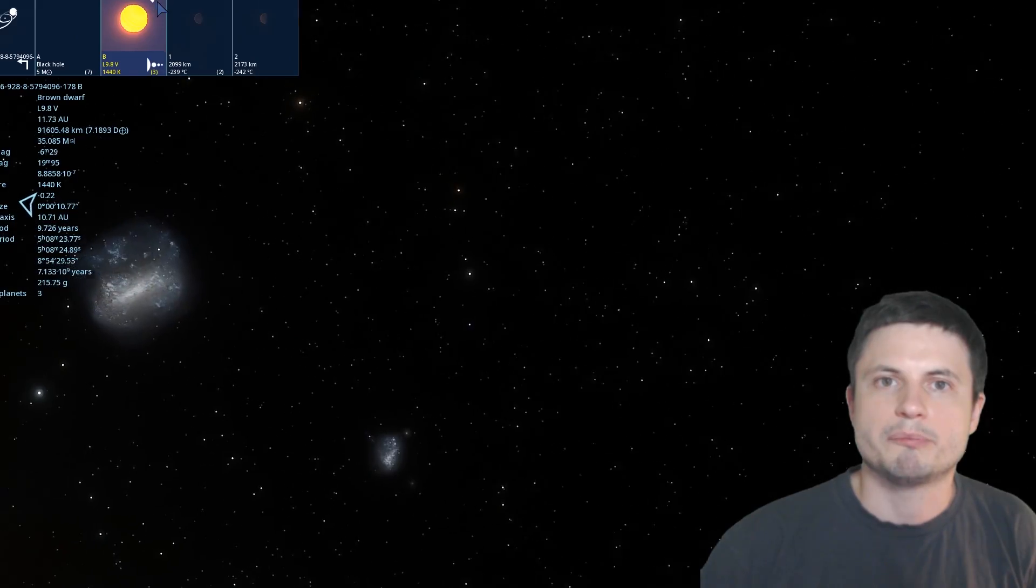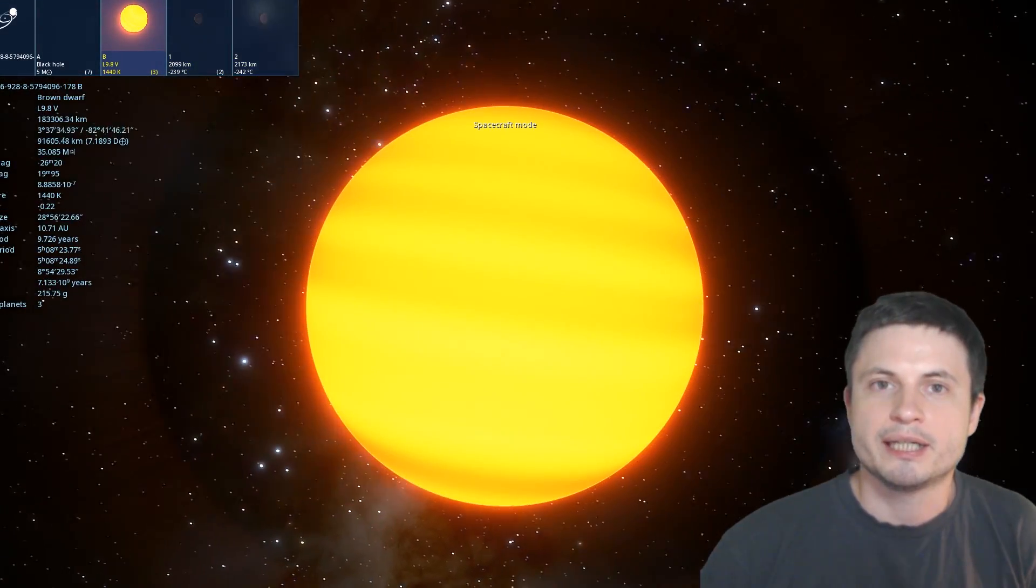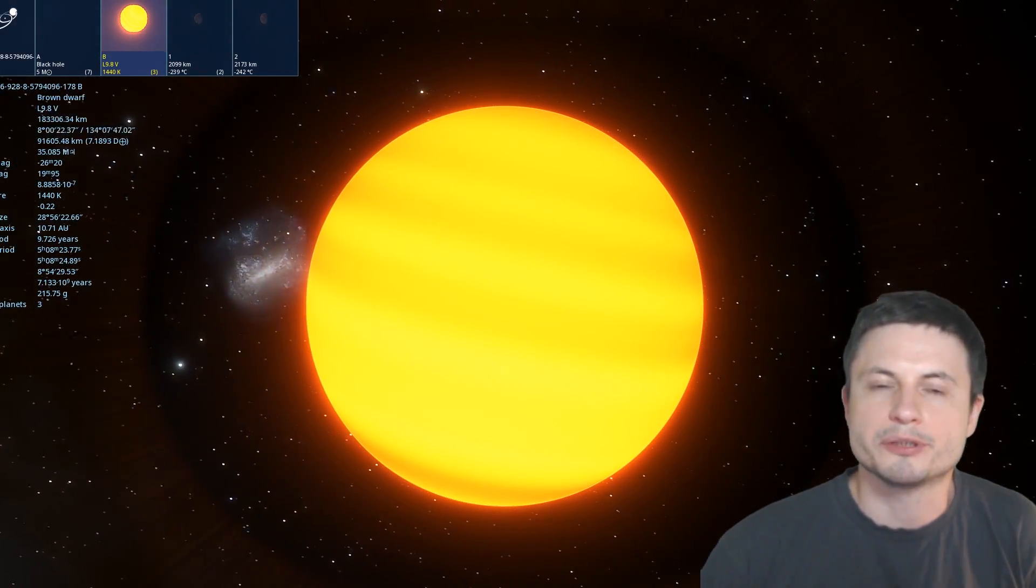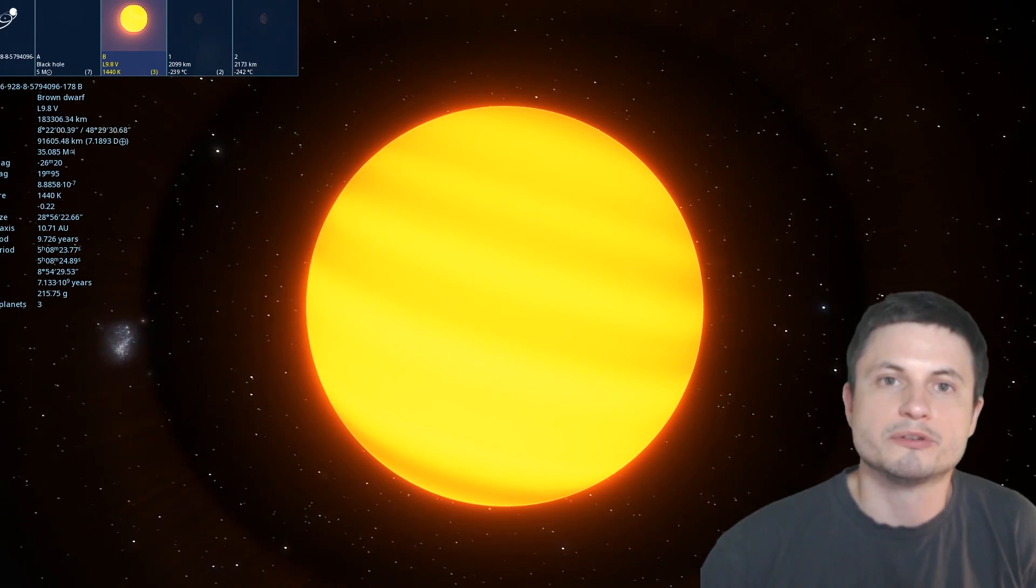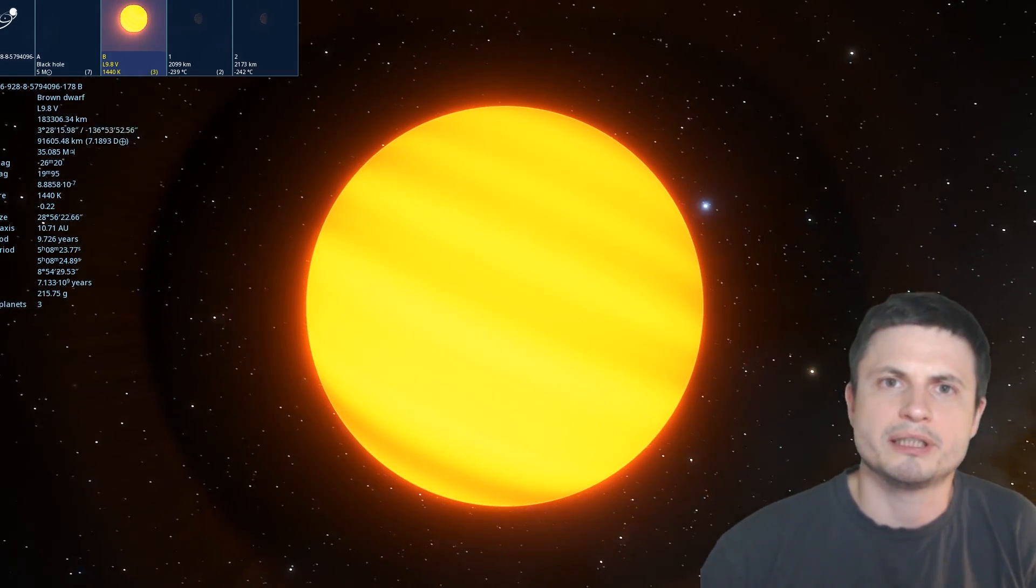So even a brown dwarf like the one you see right here, that's technically just a planet, if it were to collide with a black hole, it would release more energy than a typical supernova. And it would be visible from pretty much everywhere in the galaxy, at least if it happened in our own galaxy.